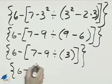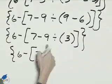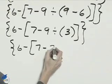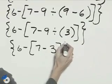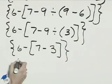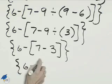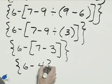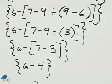Keep with 6 minus, then 7 minus 9 divided by 3 we can do, and so that will be the number 3, then we'll have 6 minus, 7 minus 3 is 4, and finally that becomes 2.